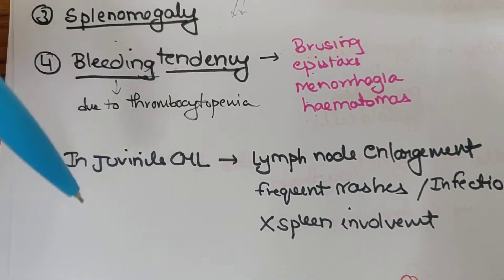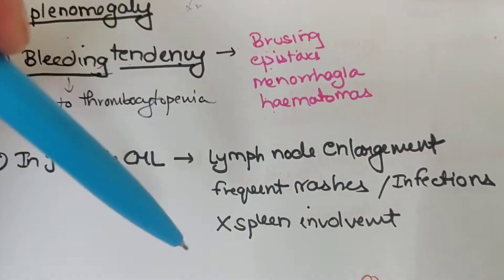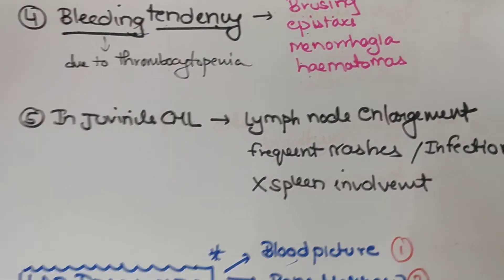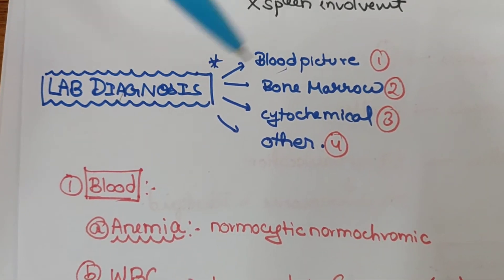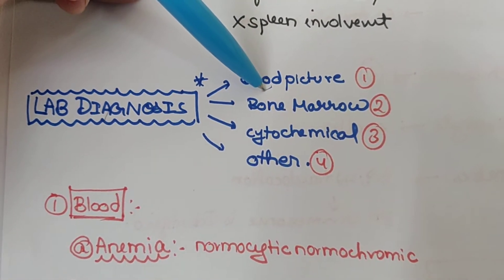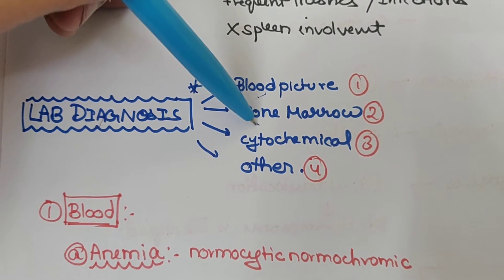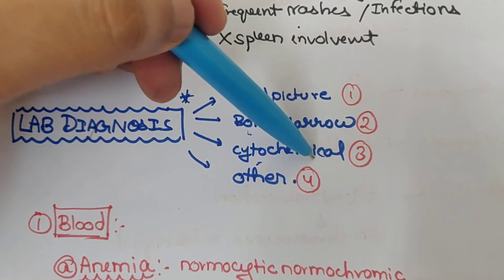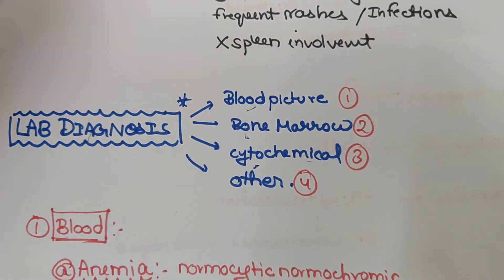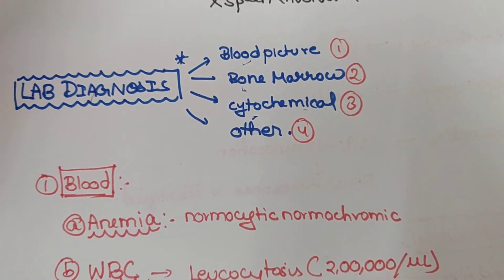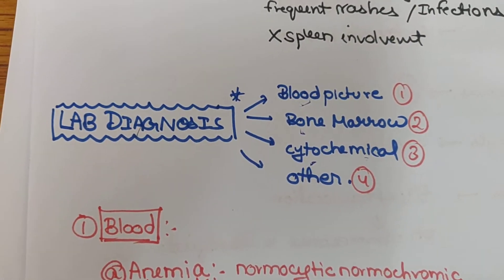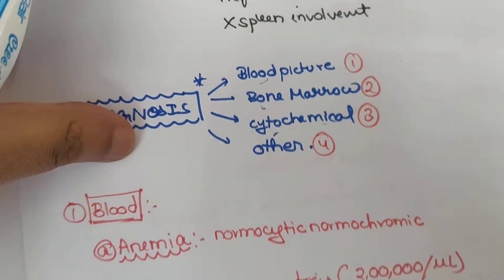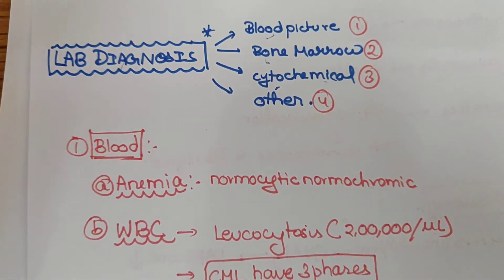In juvenile CML, lymph node enlargement occurs instead of splenomegaly, with frequent infections and rashes on the skin. Lab diagnosis includes blood picture, bone marrow examination, cytochemical studies including chromosomal studies, NAP score (neutrophil alkaline phosphatase), vitamin B12, and other tests.